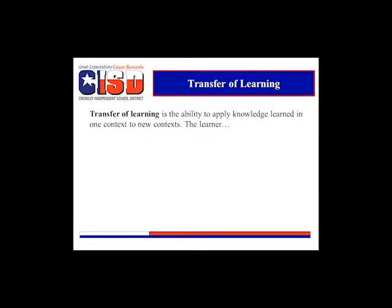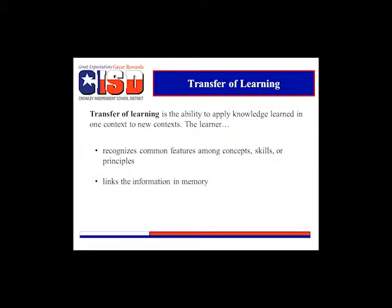Before we begin to plan for instruction, let's discuss the ability of students to transfer learning. Transfer of learning is the ability to apply knowledge learned in one context to a new context. The learner recognizes common features among concepts, skills, or principles, and links information to memory — this is when students say, 'Oh, I know when to use that!' The learner sees the value of utilizing what was learned in one situation in another, and can show their learning not only when a sample looks like what the teacher gave, but also when it does not.